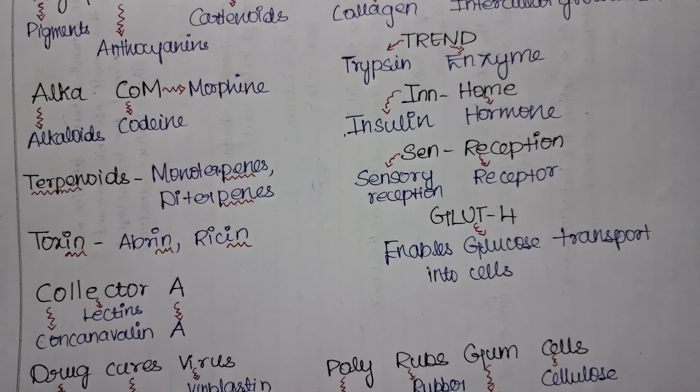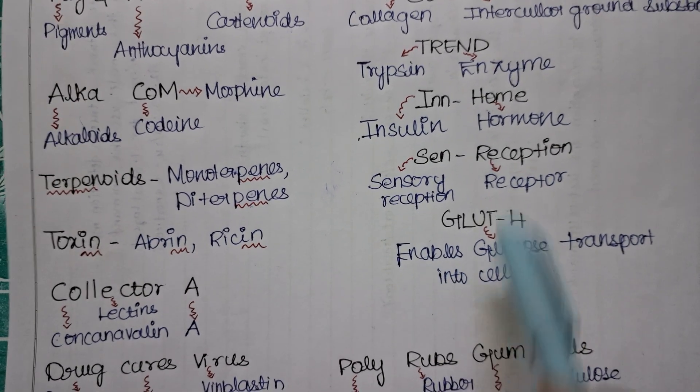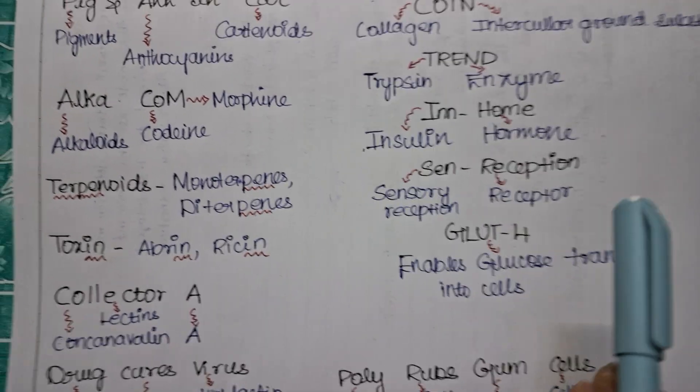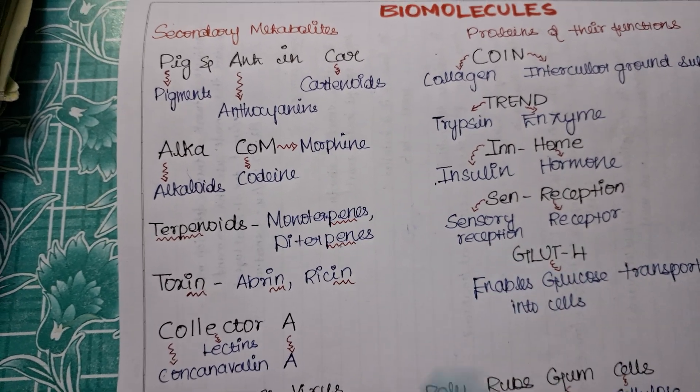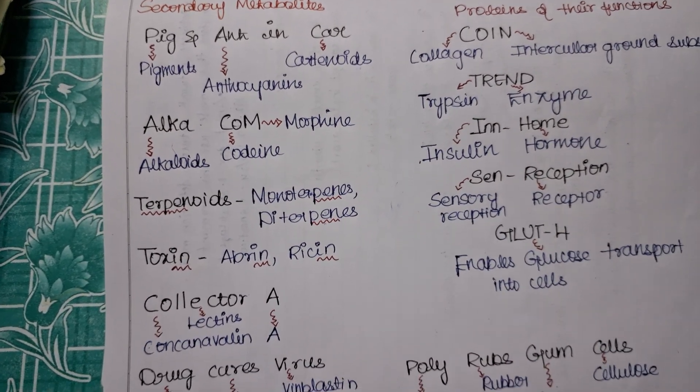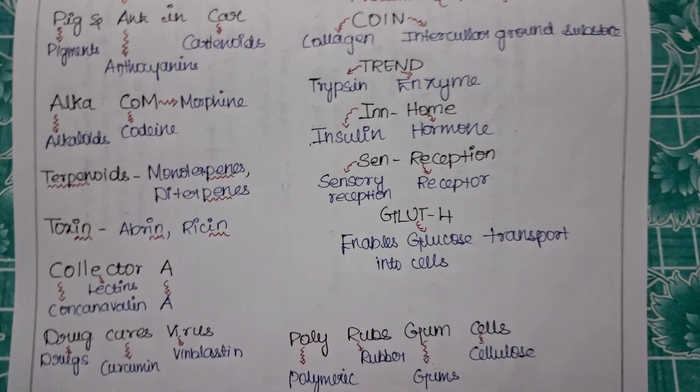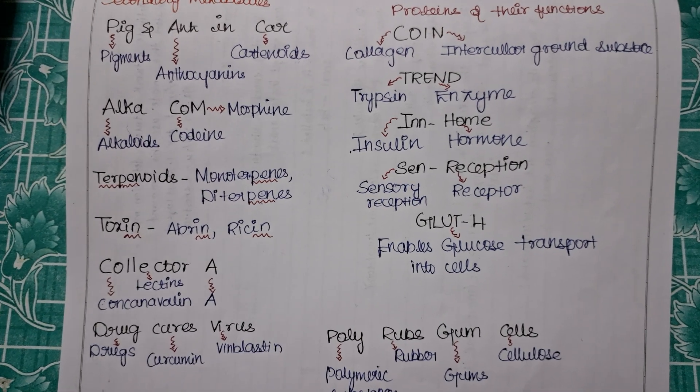Then GLUT-4. This is like GLUT, glucose. You can easily remember with the name itself. It enables glucose transport into cells. That is the function. GLUT-4 - glucose. So are we clear with the tricks for the biomolecules? Please do watch other videos also and let me know if you have any doubts or if you want video for any other. Please let me know. Thank you. See you in the next video.